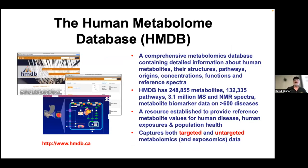The Human Metabolome Database has been around since 2006. It's the standard database for metabolomics. It has information about human metabolites' descriptions, structures, pathways, origins, concentrations, and functions, and it references NMR, GCMS, LCMS, CCS, RI, and RT data. There are a quarter million metabolites, about 130,000 pathways, millions of NMR and mass spectra, and marker and concentration data covering more than 600 diseases. It's not just a list — it's an encyclopedia designed to get reference values for human diseases, human exposures, and population health.